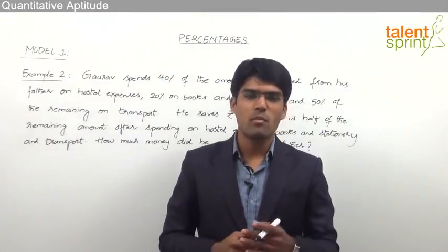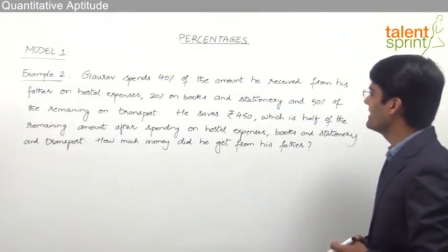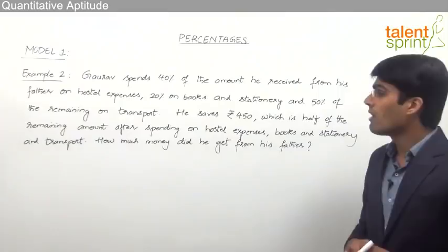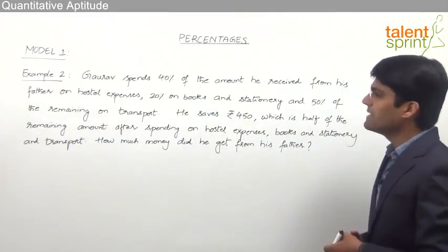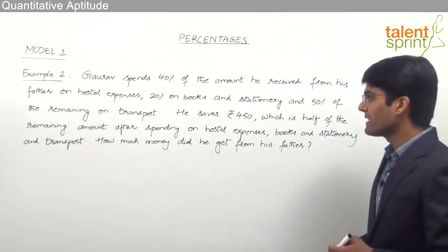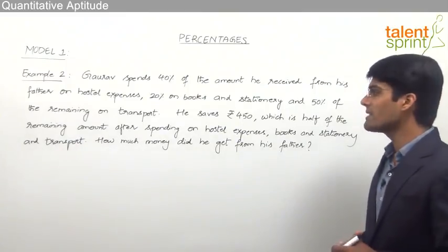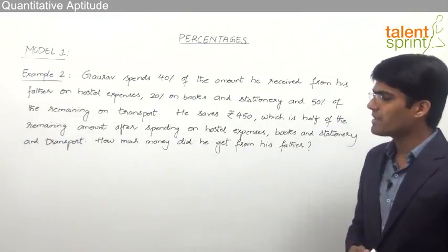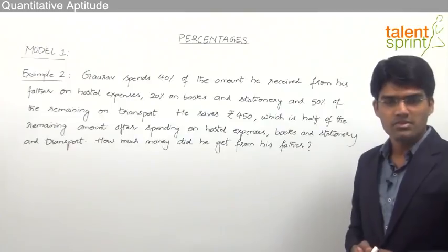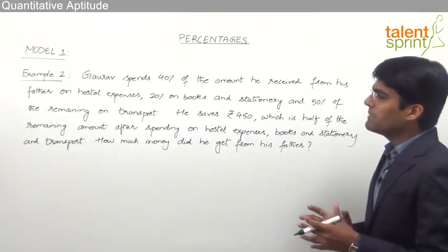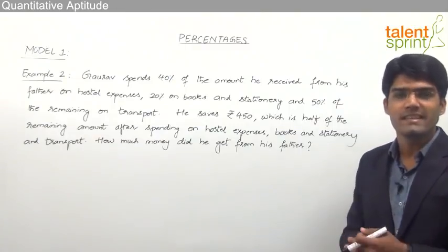Let us now take the second example from Model 1. The given question here is: Gaurav spends 40% of the amount he received from his father on hostel expenses, 20% on books and stationery, and 50% of the remaining on transport. He saves Rs. 450, which is half of the remaining amount after spending on hostel expenses, books and stationery, and transport. How much money did he get from his father?